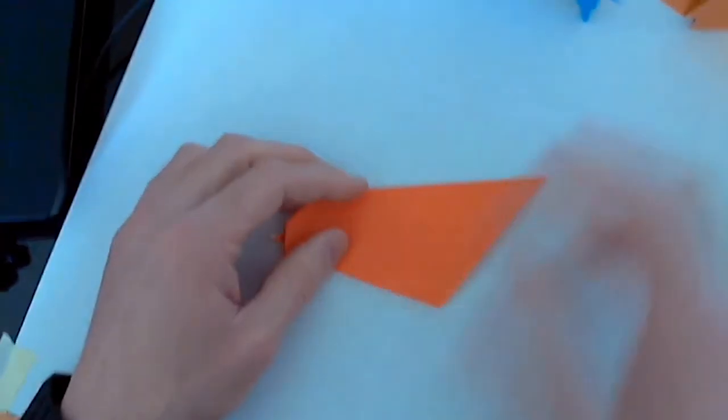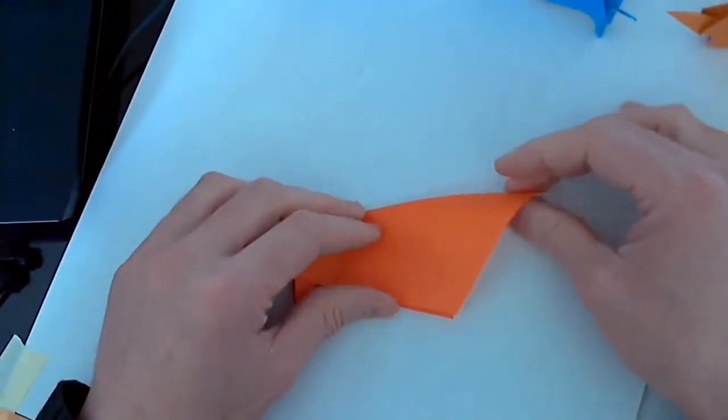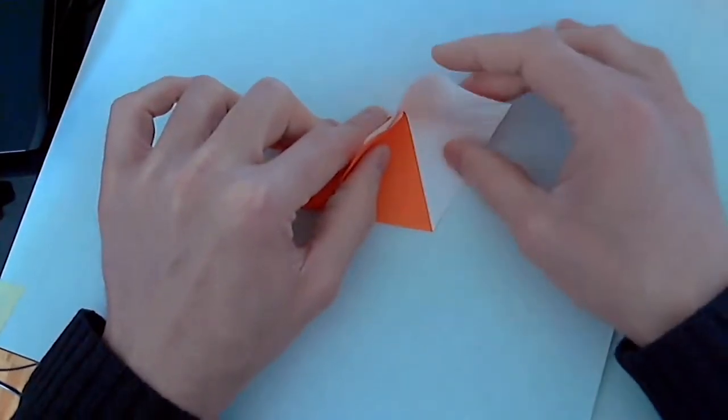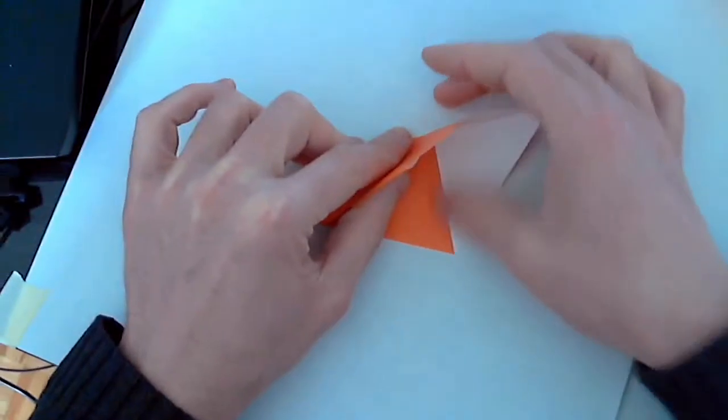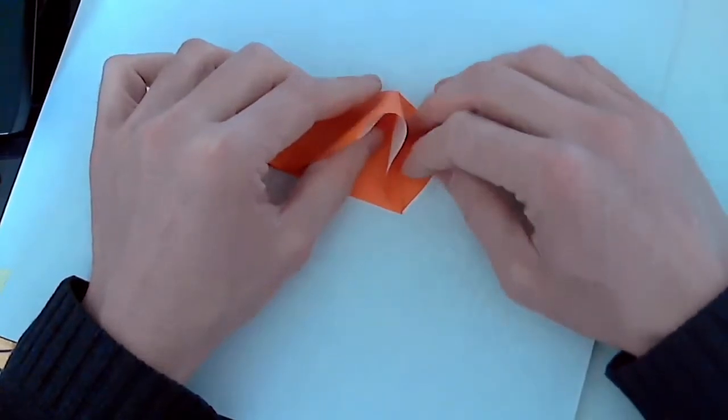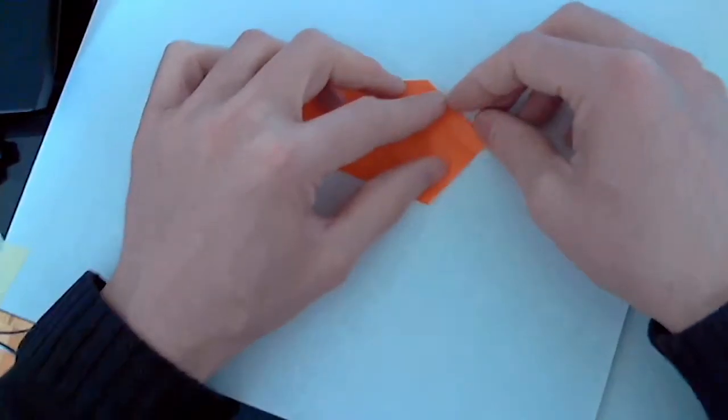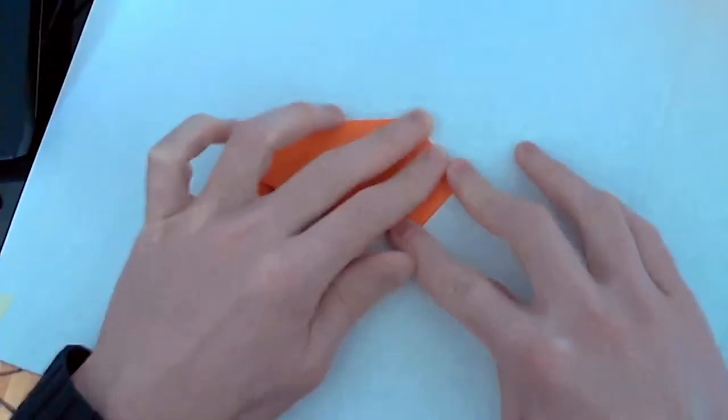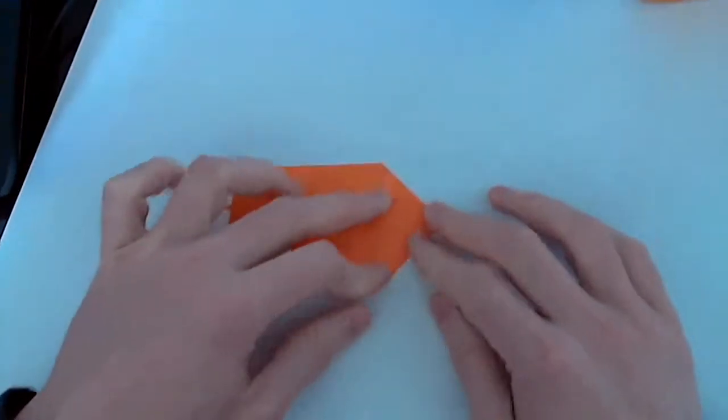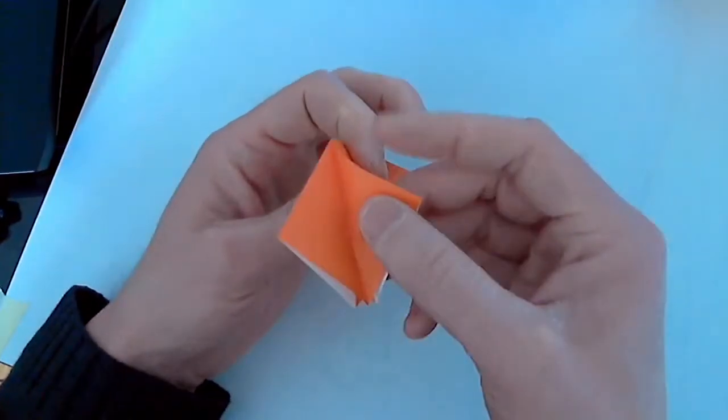Now flip everything over. We're going to do the front of the animal. Take this top corner here and pull it down. I want this fold here to line up with this line over here, and it should go there pretty easily. Now I'm going to squash everything down, making part of what's called the preliminary base. Notice that we have two flaps here that are identical to each other.